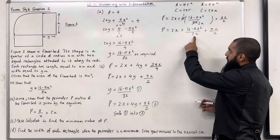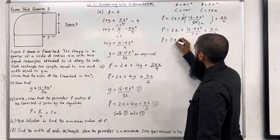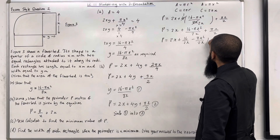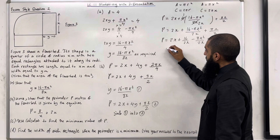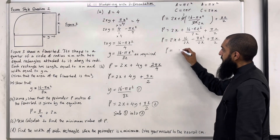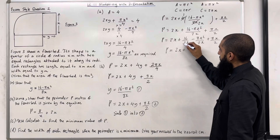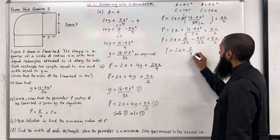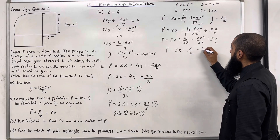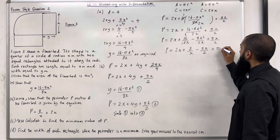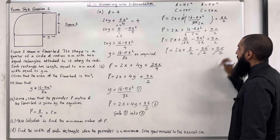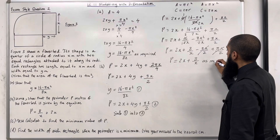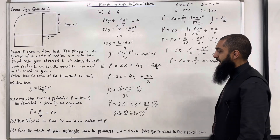We can split this fraction into two parts: P equals 2x plus 16 over 2x minus pi x squared over 2x, plus pi x over 2. Simplifying: 16 over 2x becomes 8 over x; pi x squared over 2x simplifies to minus pi x over 2; and plus pi x over 2. These last two terms cancel out. Therefore the perimeter equals 2x plus 8 over x, as required. This completes Part B.